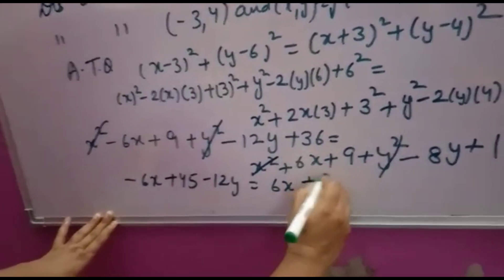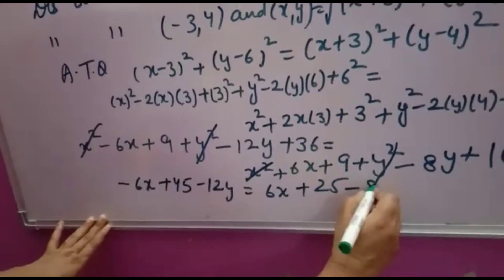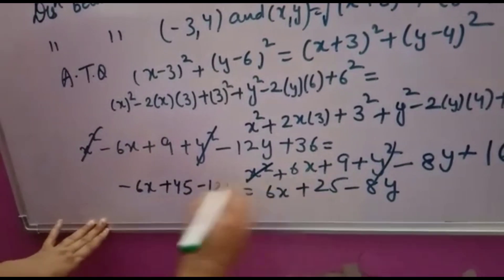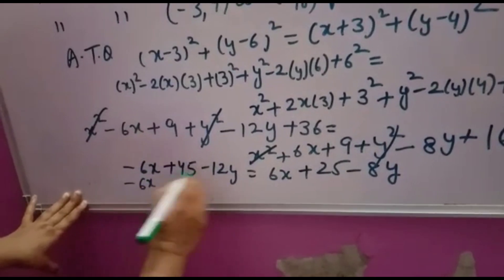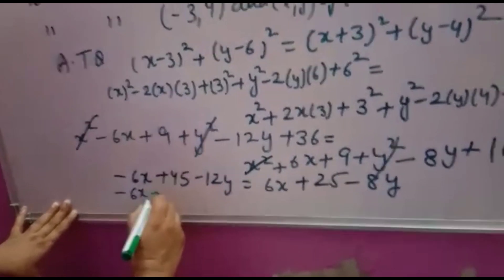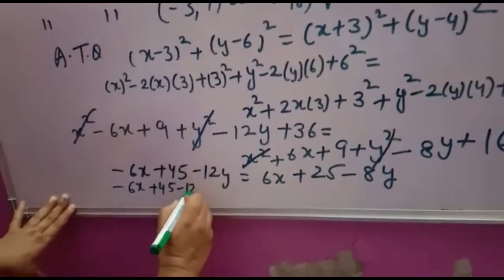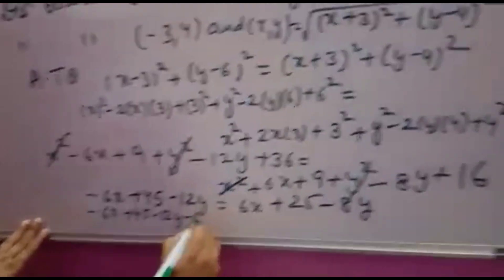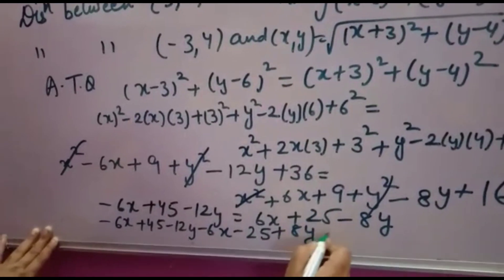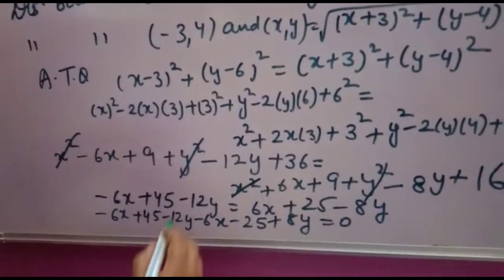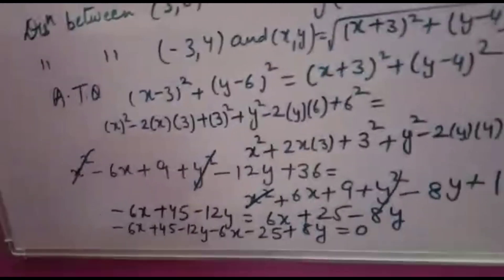Now minus 6X plus 9 plus 36 is 45, minus 12Y equals 6X plus 9 plus 16 is 25, minus 8Y. Now you can bring X and Y terms to one side. This you will write as it is, and 6X will become minus 6X, minus 25 will become plus 25, and minus 8Y will become plus 8Y equals 0. Up to here you note down, then I will rub and so on.